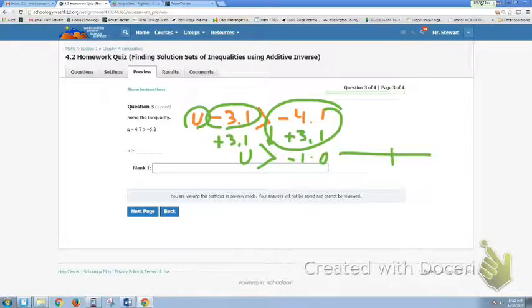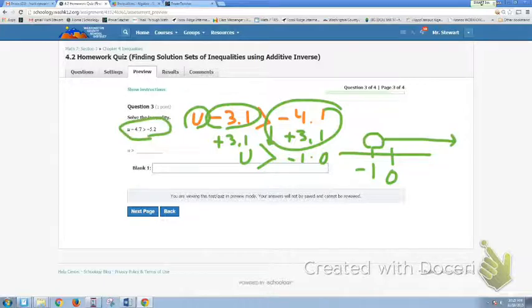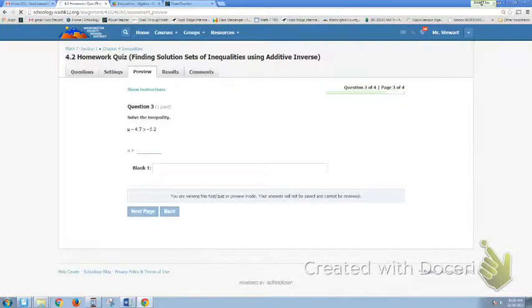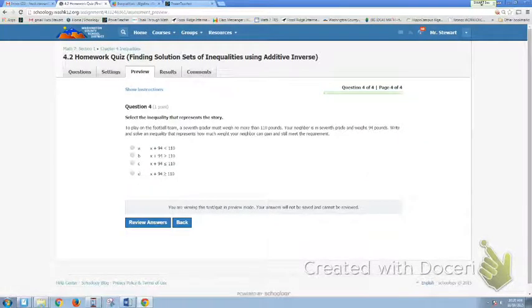Here is 0, here is a negative 1. U is larger than, larger than, but not equal to this time, larger than, but not equal to negative 1. So this is how my graph would look on mine. Yours would look different, clearly, but it's just asking you to type in the correct answer here. Okay, now let's read this together so you understand it. It says, select the inequality that represents the story. So it's not even asking you to solve it this time, it's just asking you to set it up.